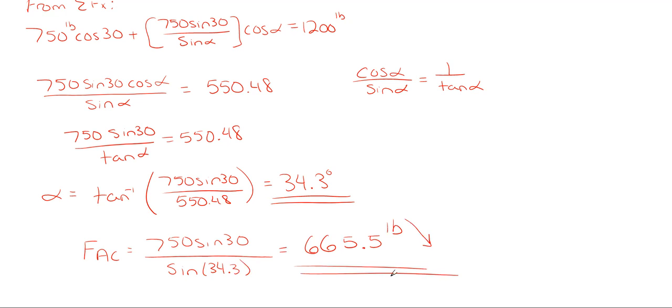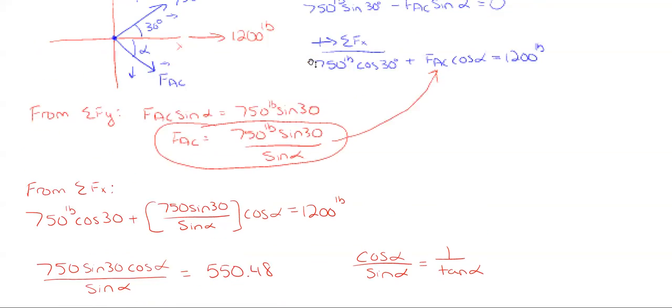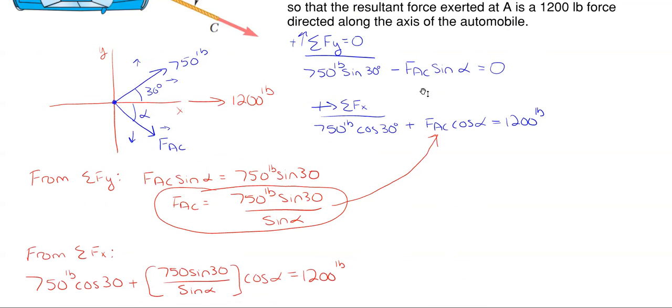So those are my two answers: my tension in my rope and the angle. Now if you want to double-check your answers here, what you can do is just take both of these for alpha and FAC and plug them back into these equations and make sure it equals zero for the y and 1200 pounds for the x.